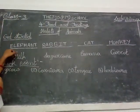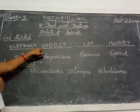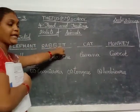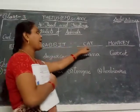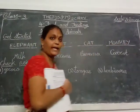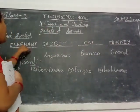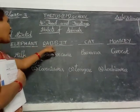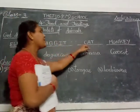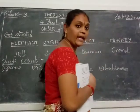Elephant — E-L-E-P-H-A-N-T, elephant. R-A-B-B-I-T, rabbit. C-A-T, cat. M-O-N-K-E-Y, monkey.